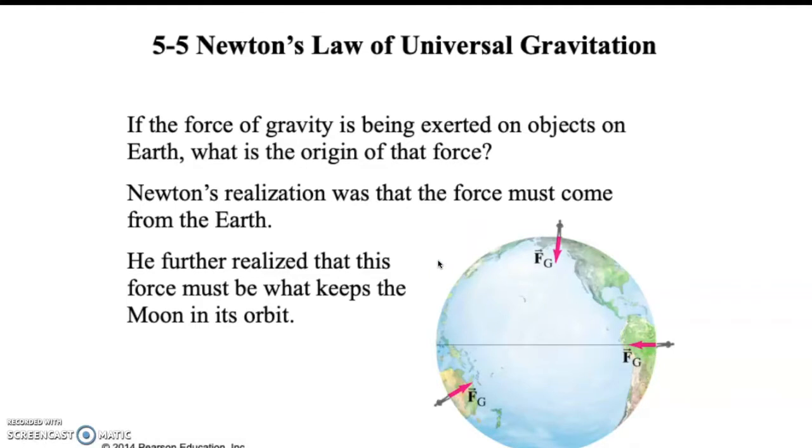If the force of gravity is being exerted on objects on the earth, what is the origin of that force? Newton realized that the force must come from the earth. He further realized that this force must be what keeps the moon in its orbit around the earth. So everything goes towards down or towards the center of the earth.